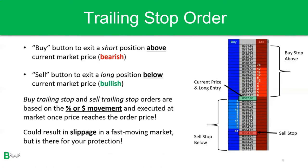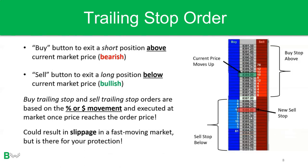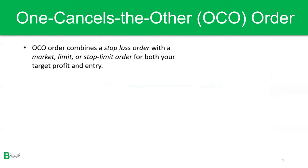Let's look at how a trailing stop order works on the active ladder. Say you went long at 8387 with an initial stop at 8384 — so you have a limit buy at 8387 and your sell trailing stop at 8384. If the underlying instrument moves up two points to 8389, the new sell stop will move to 8386, locking in profits or reducing risk based on the trade working in your favor.